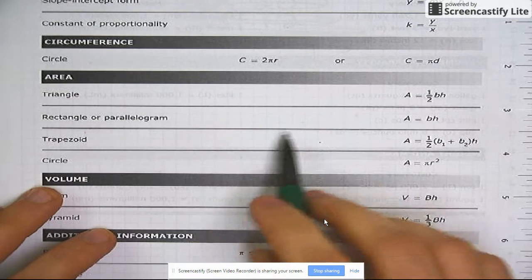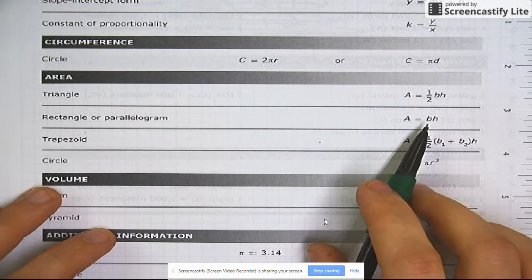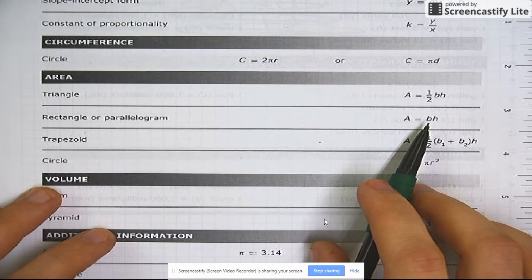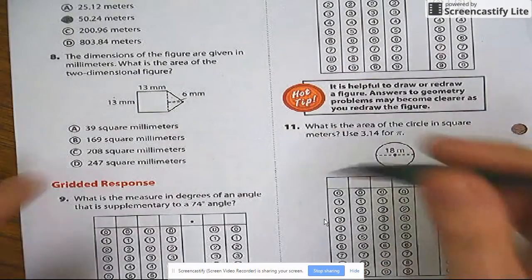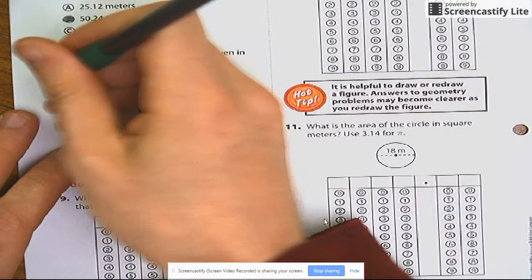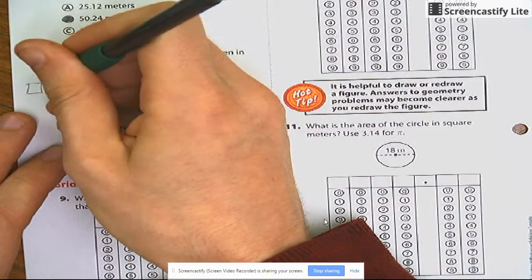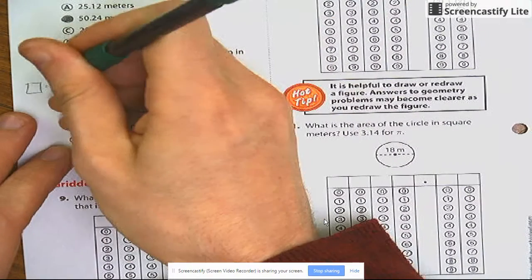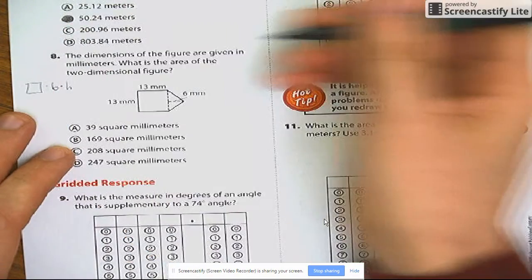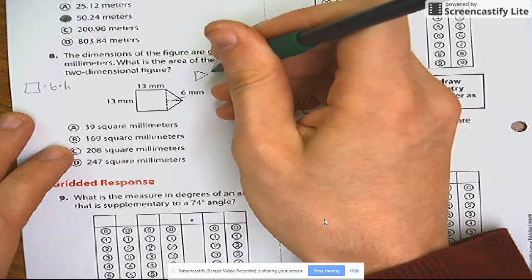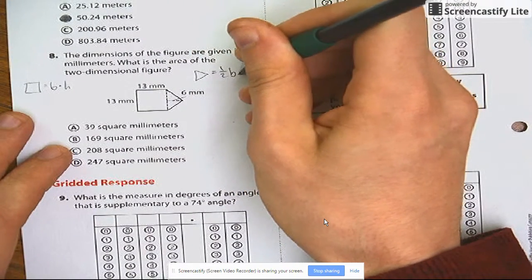A triangle is 1 half base times height. Rectangle, a square is a rectangle. It's base times height. So my square here is going to be base times height. And this part over here is going to be 1 half base times height.